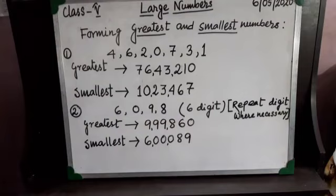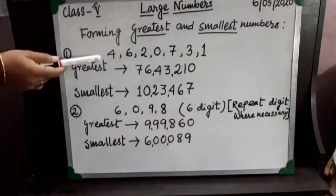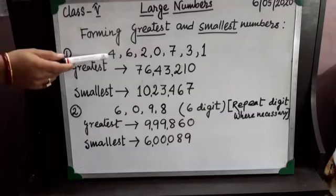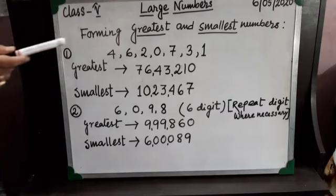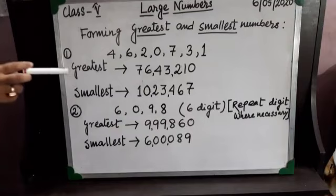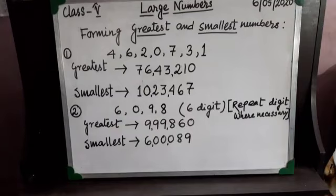Here you can see that I have given you a few numbers: 4, 6, 2, 0, 7, 3, and 1. With the help of these 7 different digits, we have to make a greatest number and a smallest number.